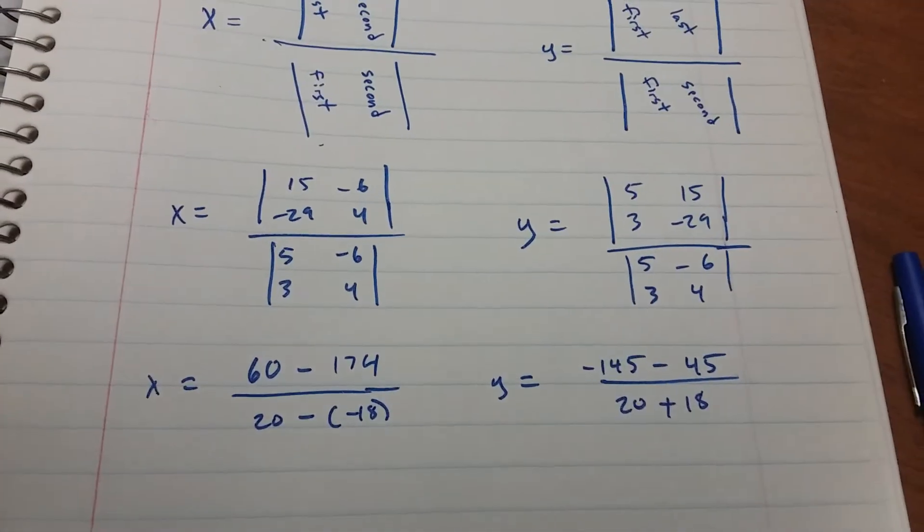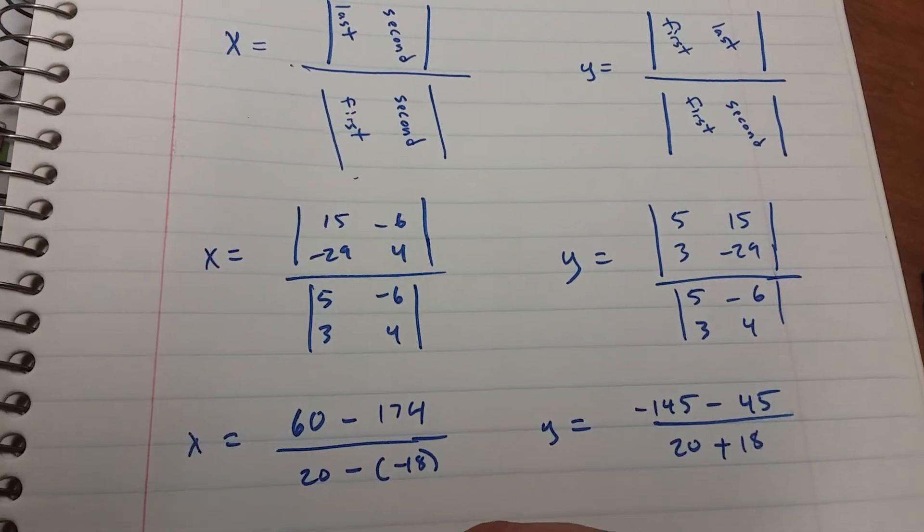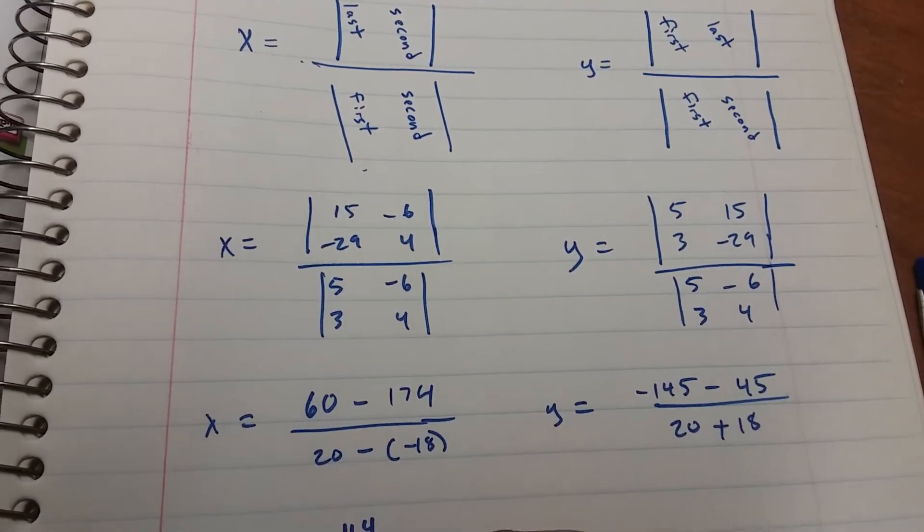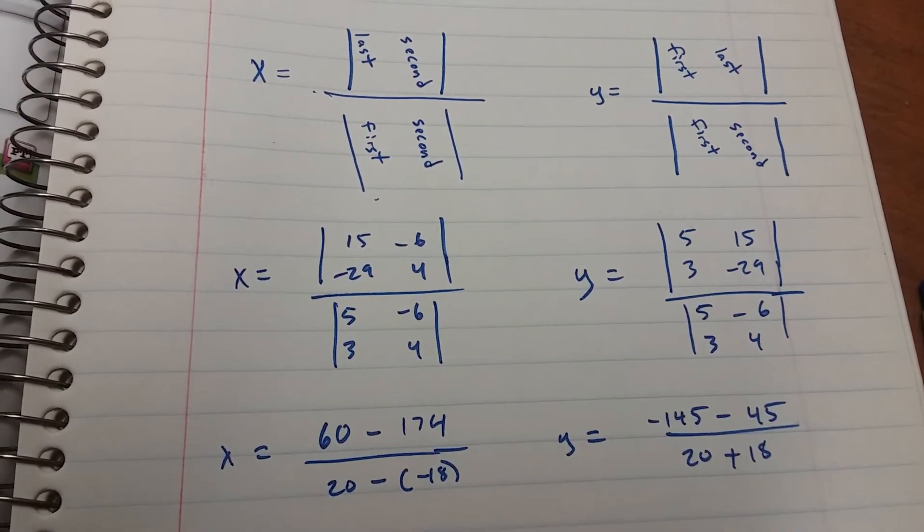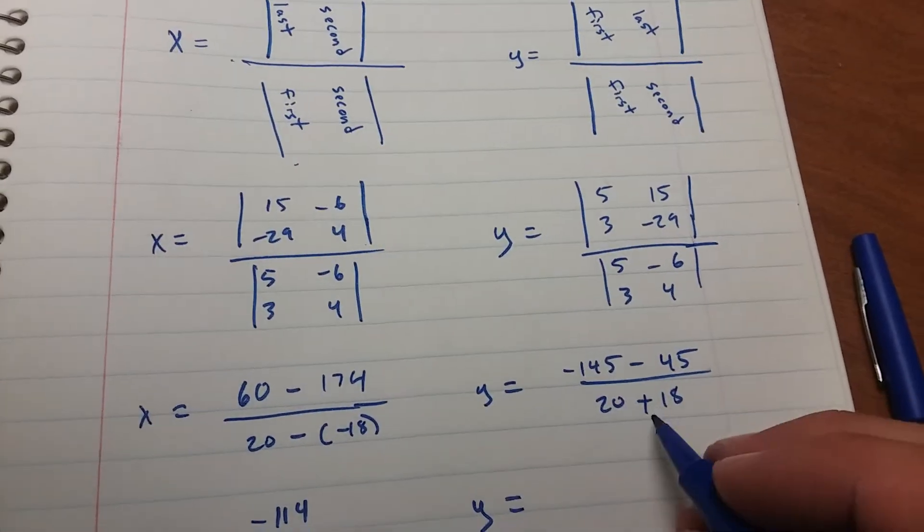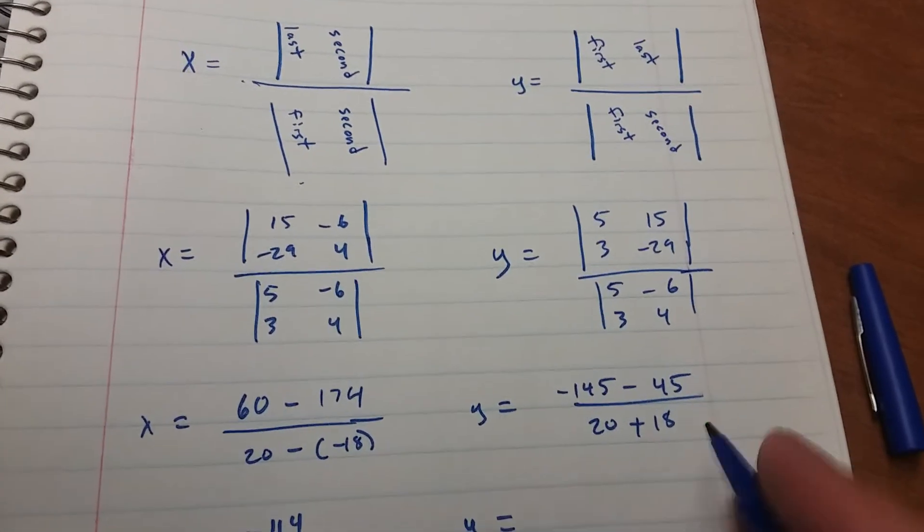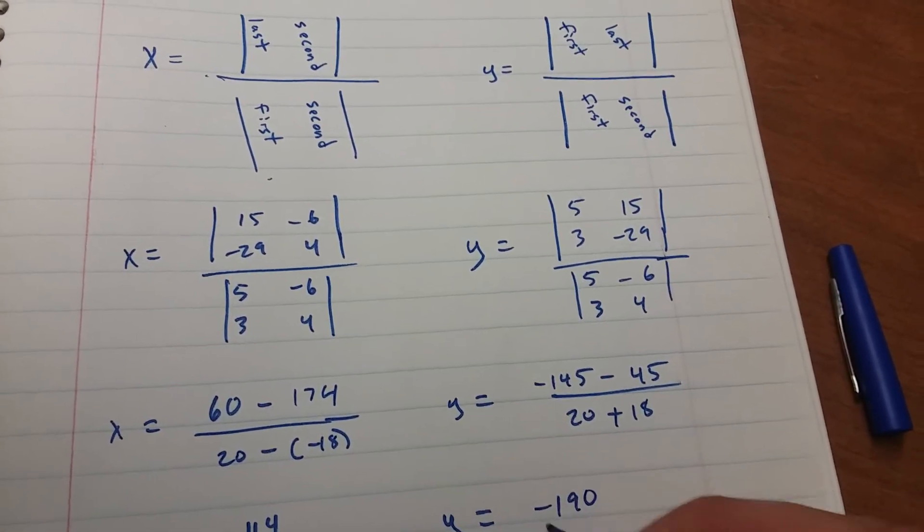60 minus 174, negative 114, over 38. So that's your x value, your y value. Okay, you got 145 plus 45, 190 over 38.